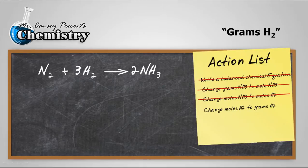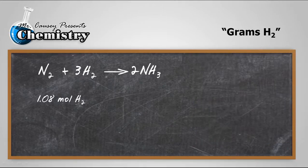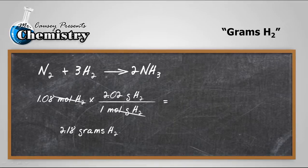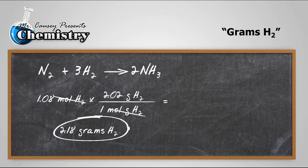Finally, the last thing we want to do is change moles of hydrogen to grams of hydrogen. Set up our equation. Again, there's our molar mass, which I calculated from the periodic table. Now, remember, hydrogen is diatomic, so be sure to take the molar mass and multiply it by 2. And there we go. Plug and chug. 2.18 grams hydrogen. And that's with our sig figs. Three sig figs in the problem.